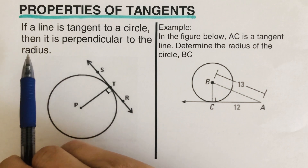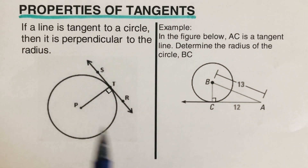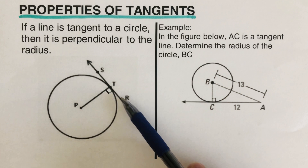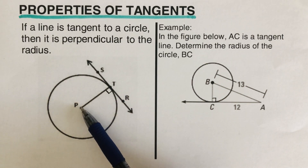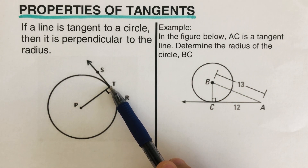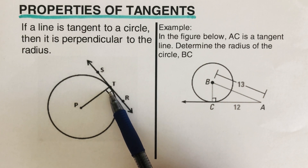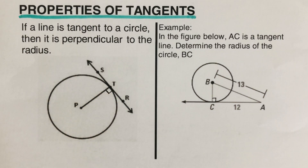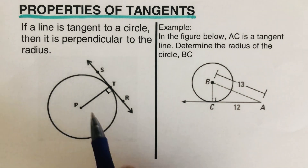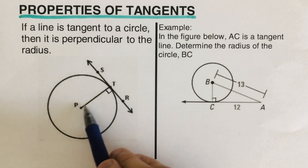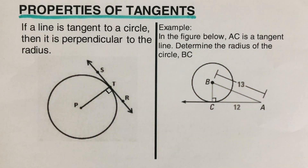Let's have the first property of tangent. If a line is tangent to a circle, then it is perpendicular to the radius. So this tangent SR will be perpendicular to the radius if and only if it's a tangent. There is a small square here indicating that this corner forms 90 degrees. A 90-degree angle is a right angle, so these two are perpendicular — they form a 90-degree angle with respect to each other.